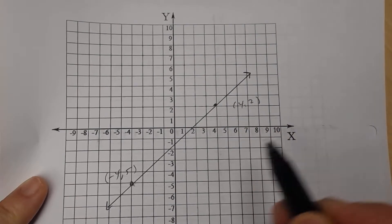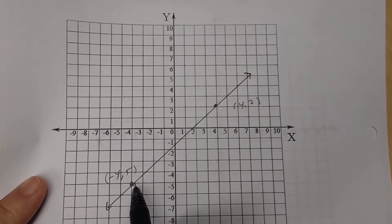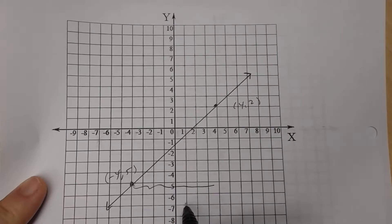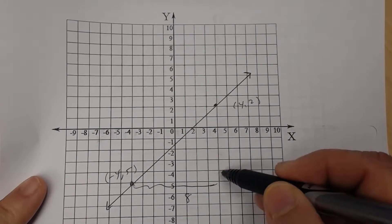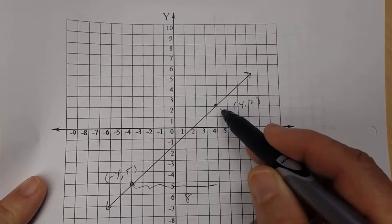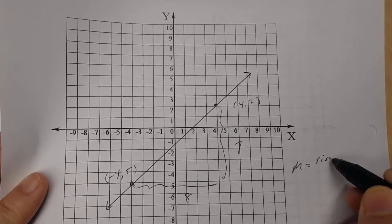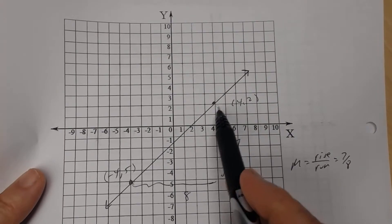To find the equation of the line, you look at a point that the line goes through. You can see that this line goes through negative four, negative five, and also through the point four, two. Using rise over run: the run is eight and the rise is seven. So the slope is seven-eighths.